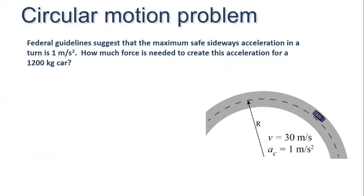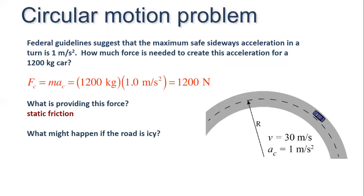Another problem: how much force is needed to create this acceleration for a 1200 kg car? Using Fc = mac, we get a centripetal force of 1200 N. What is providing this force? Static friction. What might happen if the road is icy?